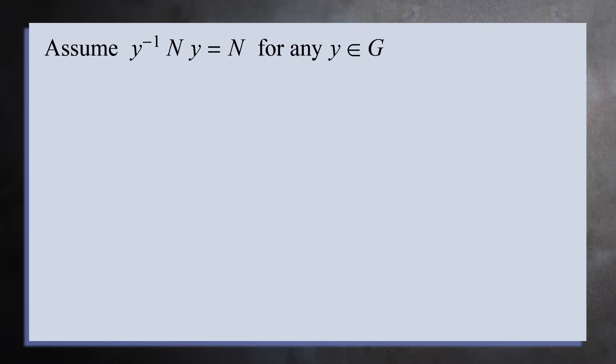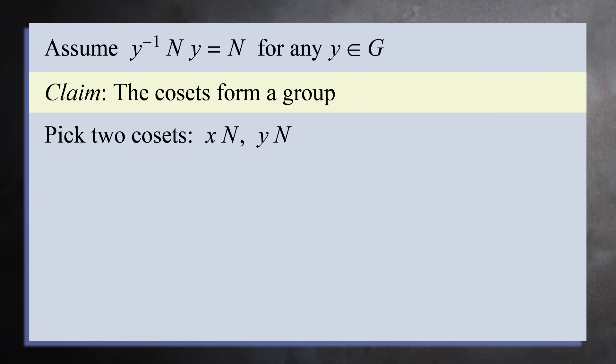Suppose y inverse times N times y equals N for any element y. We'll use this fact to show that the cosets form a group. To begin, pick two cosets xN and yN. Let's multiply two arbitrary elements from these cosets.